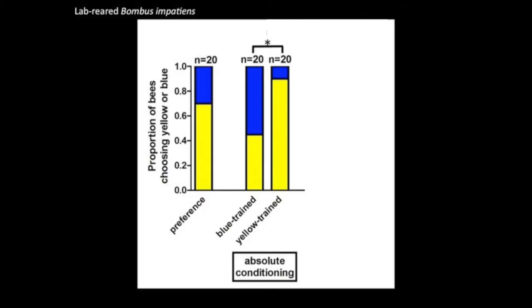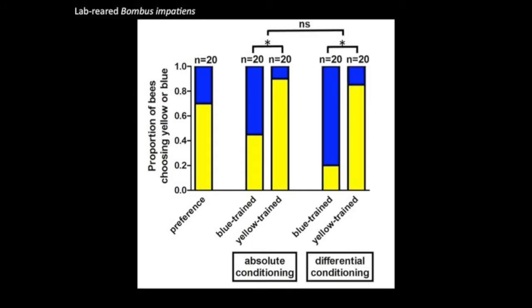Using lab-reared Bombus impatiens bumblebees, we carried out preference tests where we gave bees a choice between the two colours and then trained them either by absolute or by differential conditioning. We found that bees learnt the associations with the colours they were trained to in the way that you would expect. However, the degree to which bees learnt, as shown by their test performance, didn't differ between the absolute and the differential training conditions, which isn't what we'd expect. We'd expect the bees trained via differential conditioning to learn better.